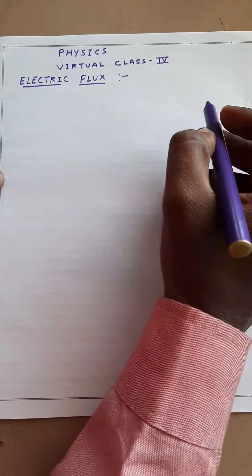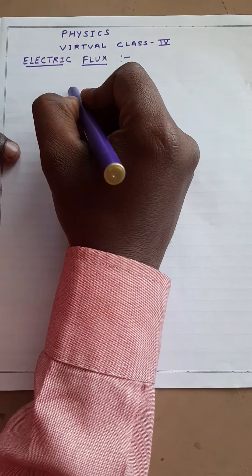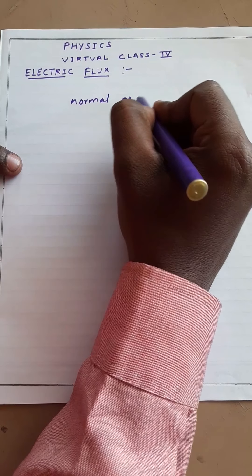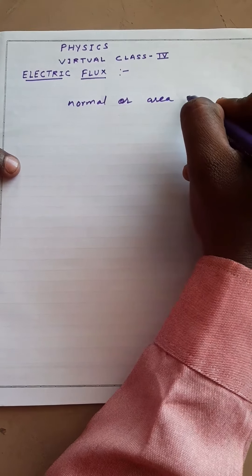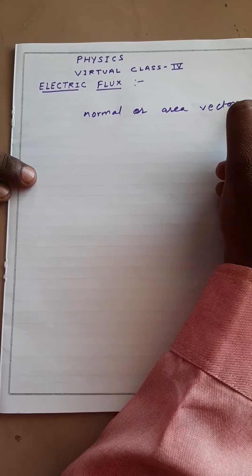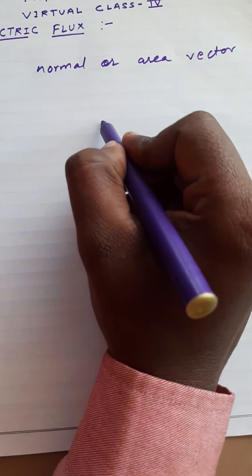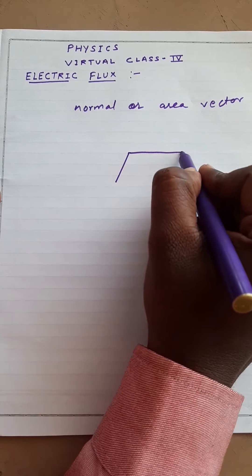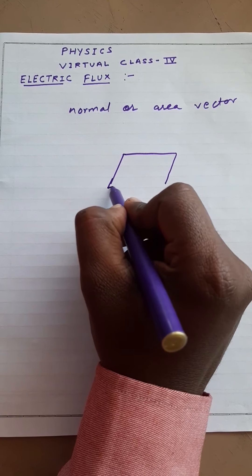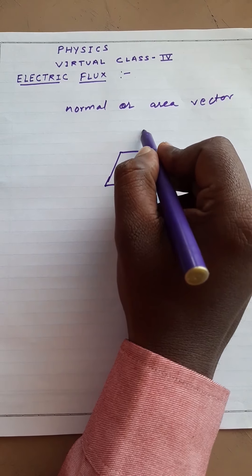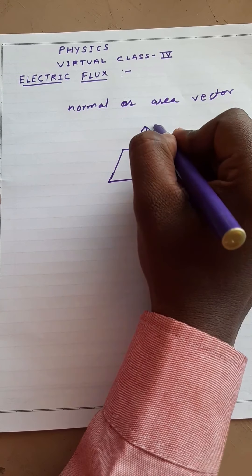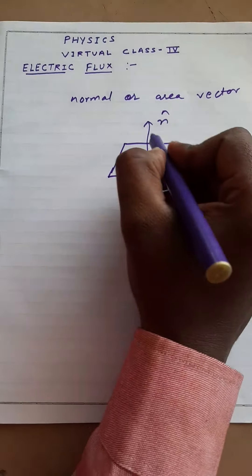Before understanding this, we need to know what is a normal or area vector. Anything that is perpendicular to a plane is said to be a normal vector.